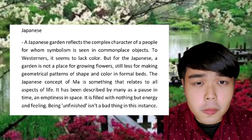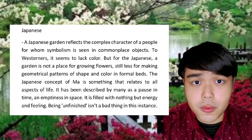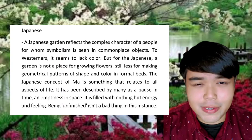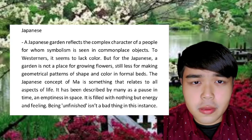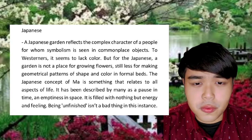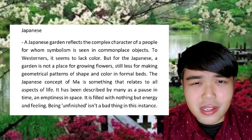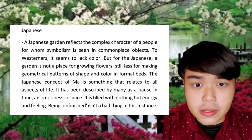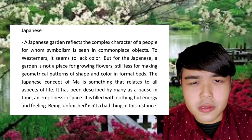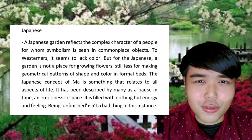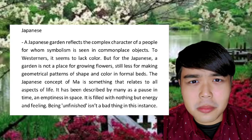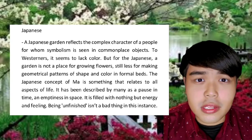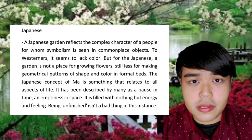A Japanese garden reflects the complex character of a people for whom symbolism is present in commonplace objects. To Westerners, it seemed to lack color, but for the Japanese, a garden is not a place for growing flowers, still less for making geometrical patterns of shapes and color in a formal bed. The Japanese concept of 'ma' is something related to all aspects of life — it has been described by many as a pause in time and emptiness in space, filled with nothing but energy and feeling.